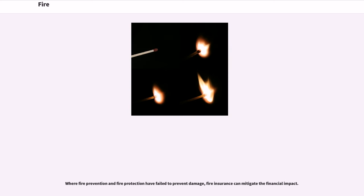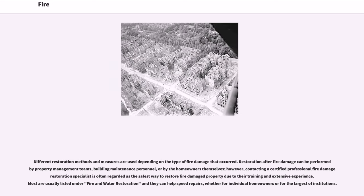Where fire prevention and fire protection have failed to prevent damage, fire insurance can mitigate the financial impact. Different restoration methods and measures are used depending on the type of fire damage that occurred. Restoration after fire damage can be performed by property management teams, building maintenance personnel, or by the homeowners themselves. However, contacting a certified professional fire damage restoration specialist is often regarded as the safest way to restore fire-damaged property due to their training and extensive experience.